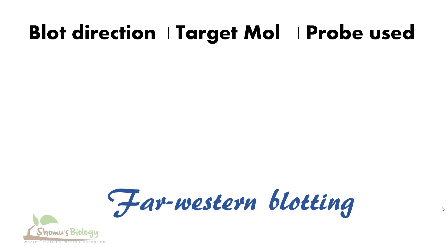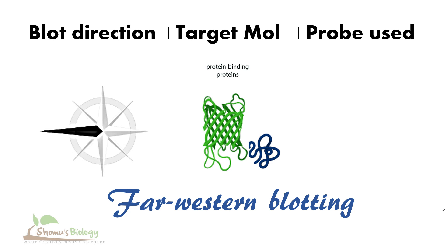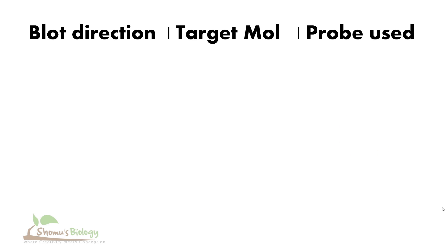Then comes the far western blotting technique. Far western blotting is used to detect protein-protein interactions — specifically protein-binding proteins. It identifies proteins that can bind with other proteins, and we can get a slight idea of how those proteins interact. We use other accessory proteins as a probe.